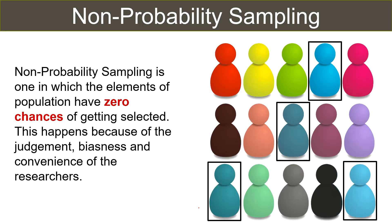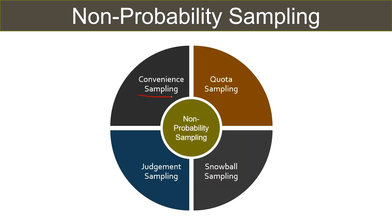Coming to the methods of non-probability sampling: Convenience sampling — depending on the ease of access, when the elements are selected from the population to create a sample, it is called convenience sampling. Quota sampling — in this form of sampling, the researcher sets quotas, i.e. criteria, to ensure that the sample chosen represents the desired characteristics.